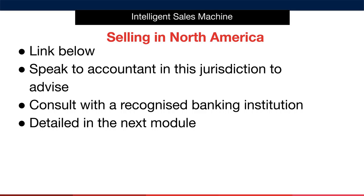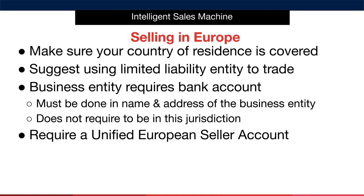Now let's talk about setting up for sale in Europe. Just like the US, you'll need to make sure your country of residence is covered. We suggest a separate limited liability entity to trade there. This business entity requires a bank account to be able to accept funds from Amazon, and this bank account must be in the name and address of the business entity. As with the US, the bank account is not required to be in the same jurisdiction as where the company was set up. Finally, you will require a unified European seller account, which is separate to the one you will require for Amazon.com.